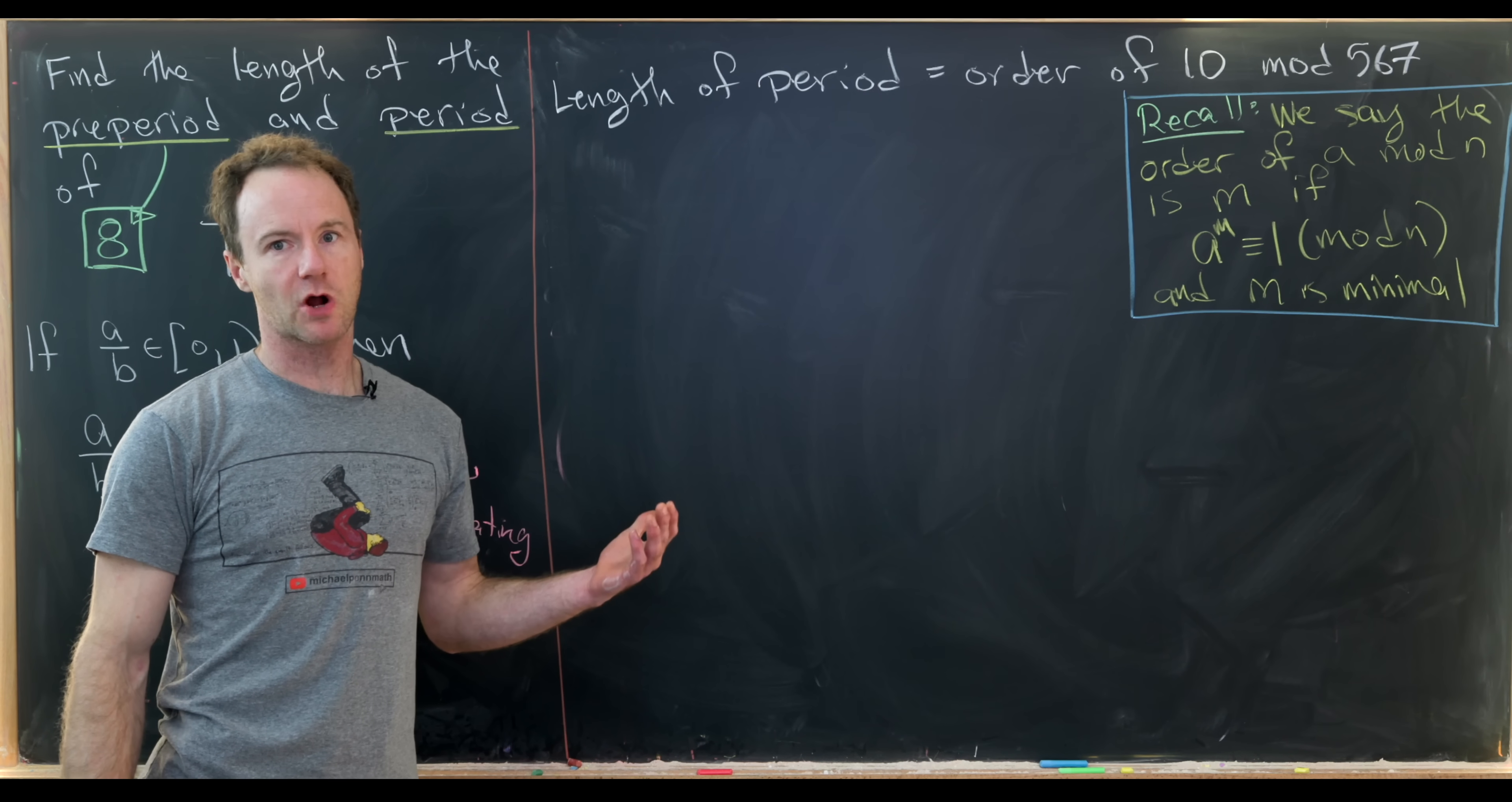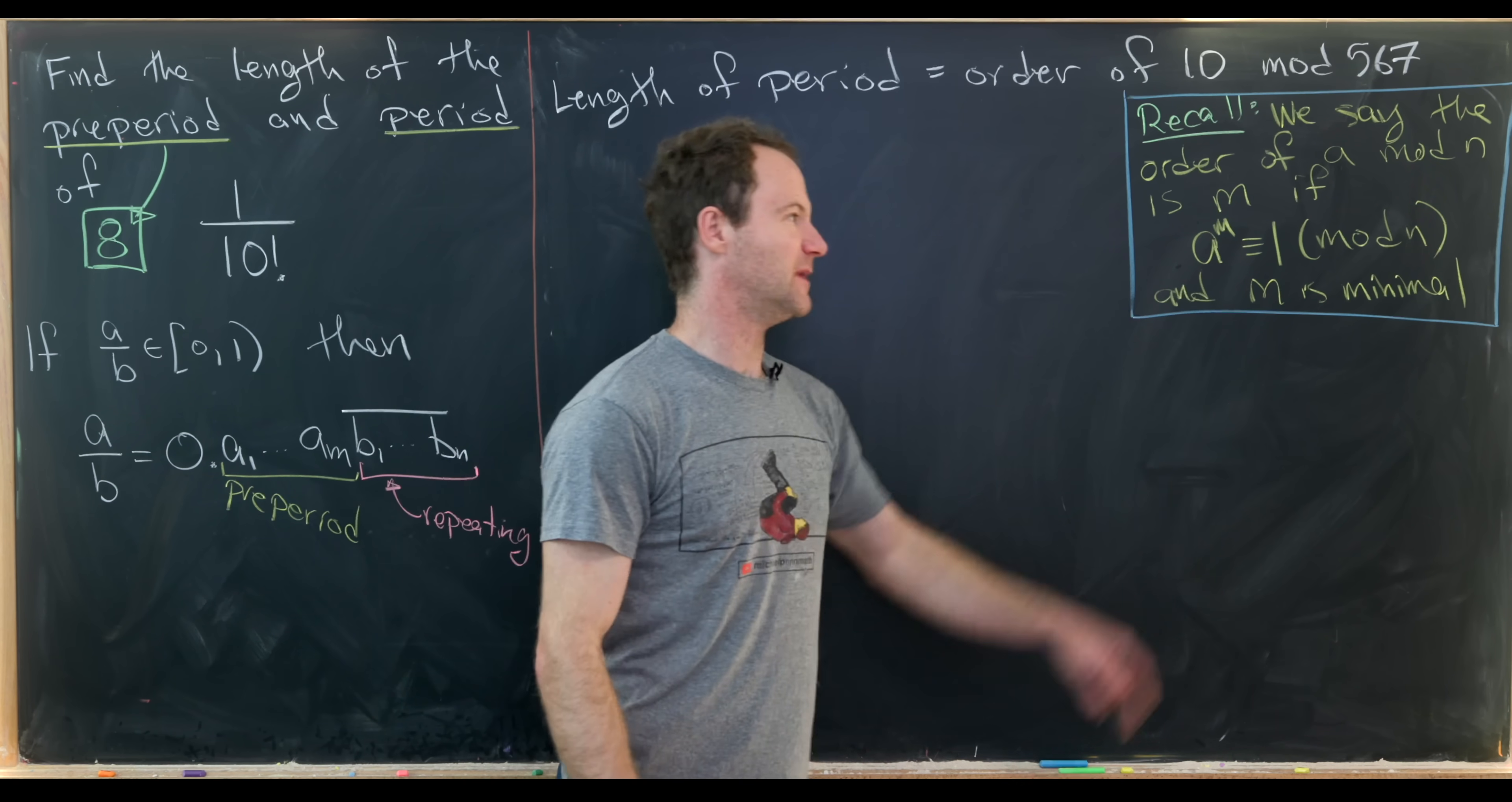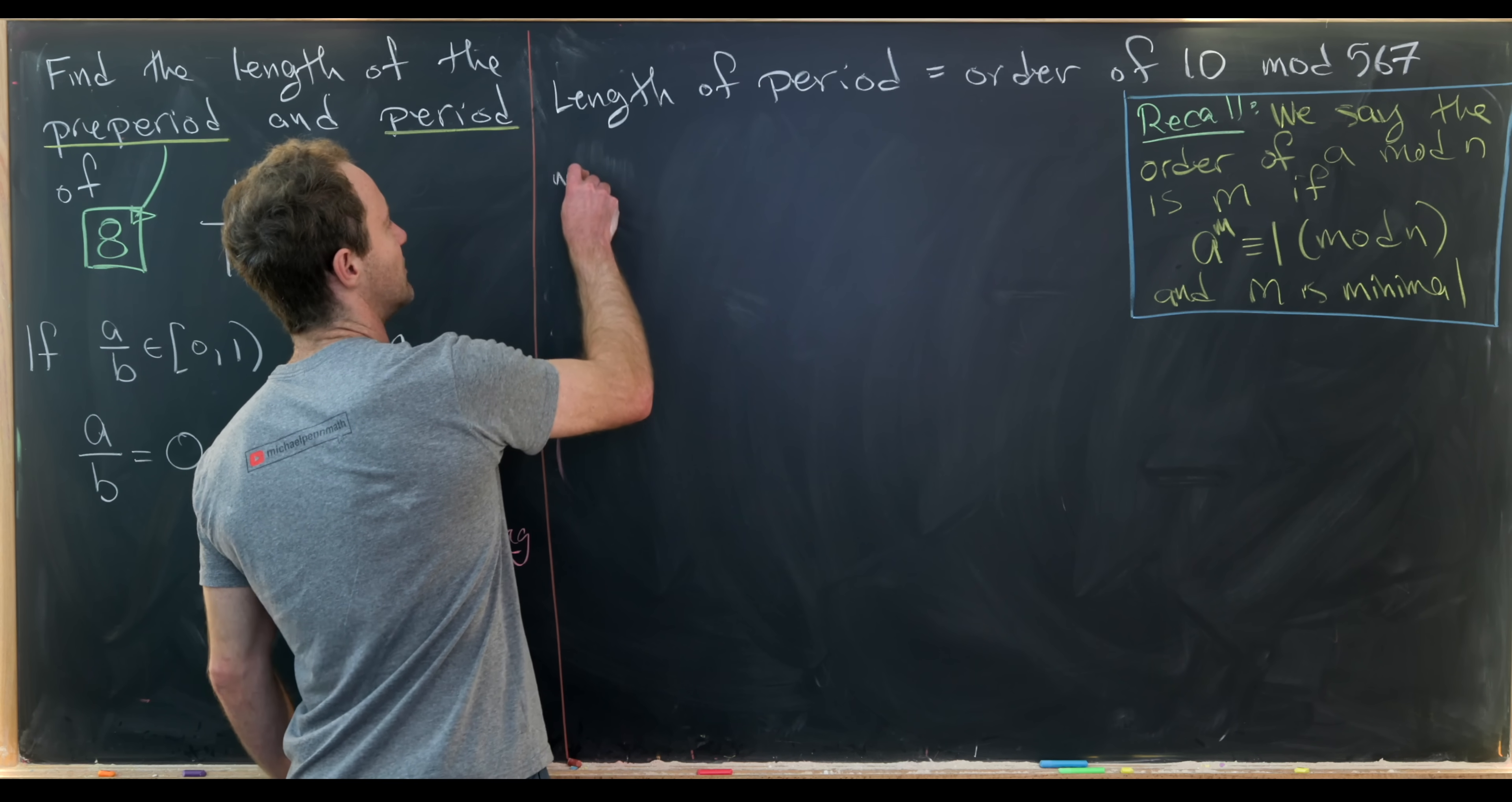But now I want to recall the definition of the order of an integer modulo n. So we say the order of a number a mod n is m if a to the m is congruent to 1 mod n, and m is the minimal such number that lets us achieve that. And here we're taking m to be a natural number. We'll also use the fact that the maximum order mod n is phi of n. So Euler's Totient function applied to n.